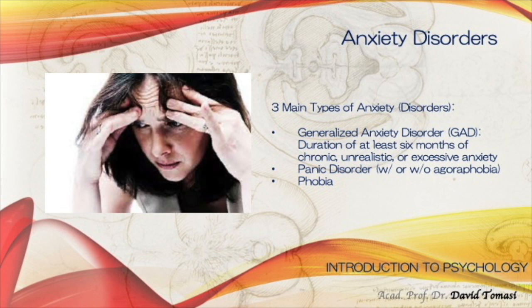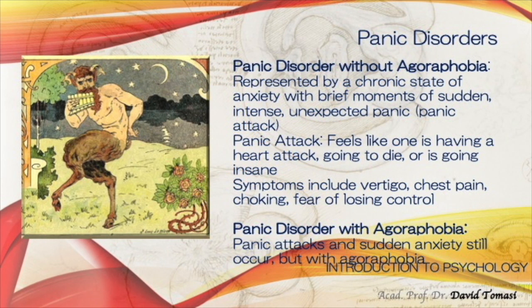Denial is the most primitive defense mechanism — you deny reality. Repression occurs when painful memories or anxieties are held out of awareness, connected to the subconscious self. Reaction formation is when impulses are repressed and the opposite behavior is exaggerated. Projection is when one's own unacceptable feelings or traits are seen in others. Rationalization is the justification of personal actions by giving rational but false reasons.